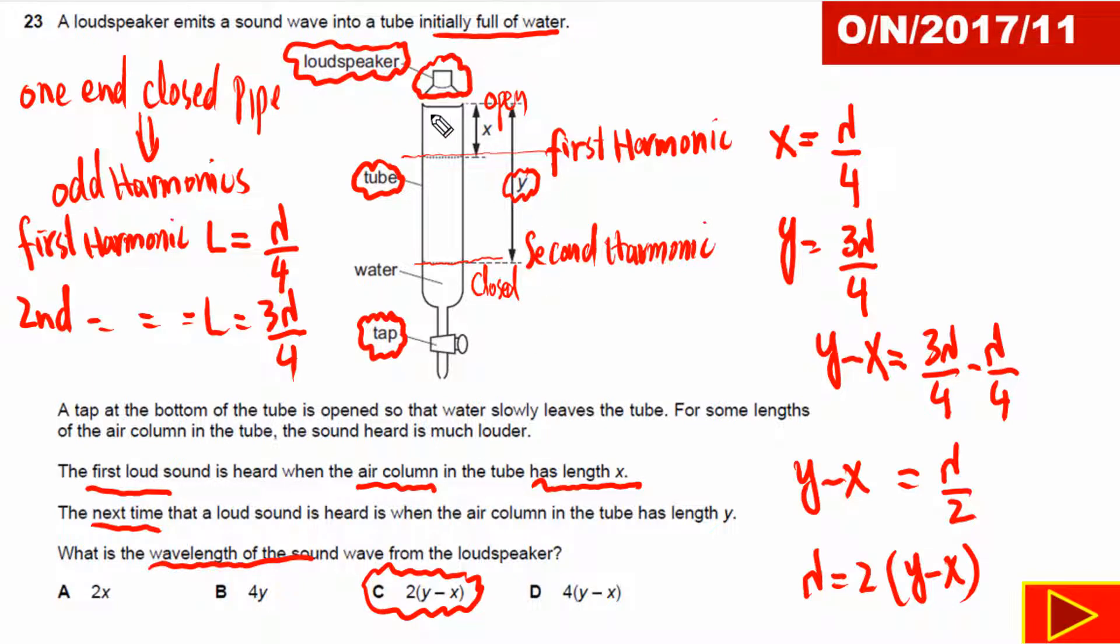If you want to draw the stationary wave you can also draw like this - maybe you can understand better like this. So this is the first harmonic, the stationary waves formed, and the second harmonic is formed. So this is how stationary waves are formed inside.